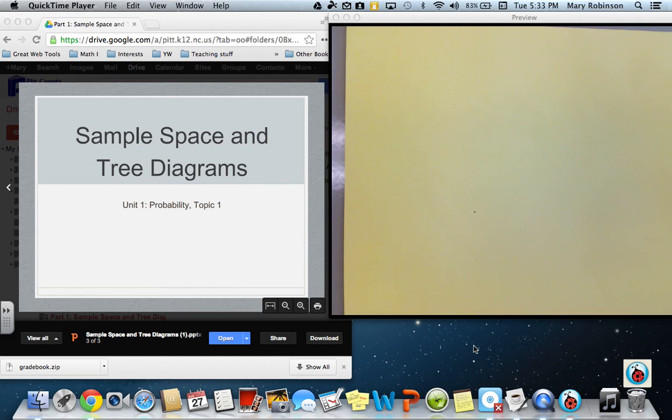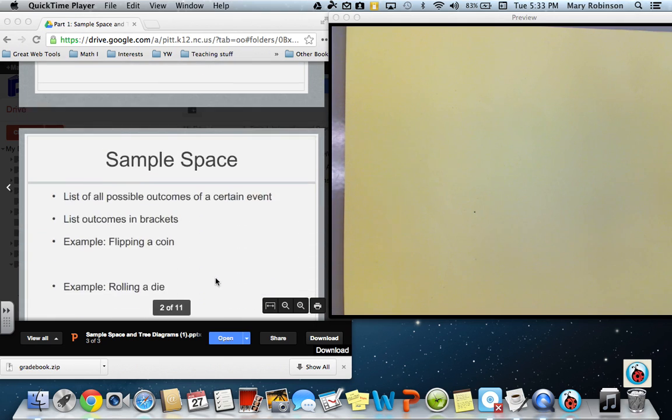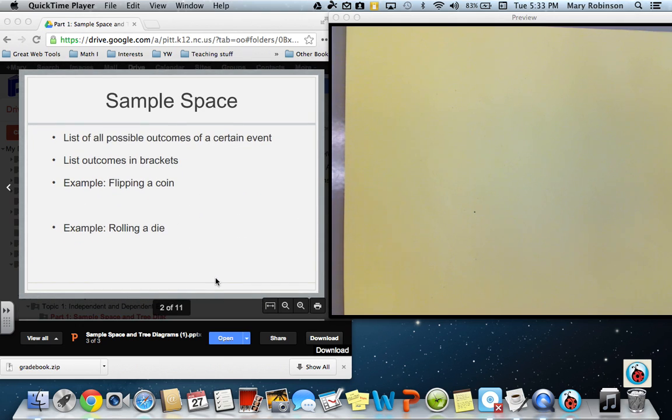This lesson is on sample space and tree diagrams. A sample space contains the list of all possible outcomes of a certain event. We will always want to list these outcomes in brackets or braces.